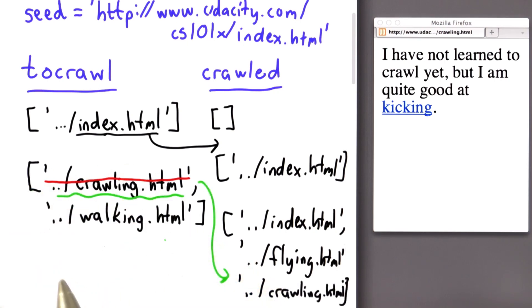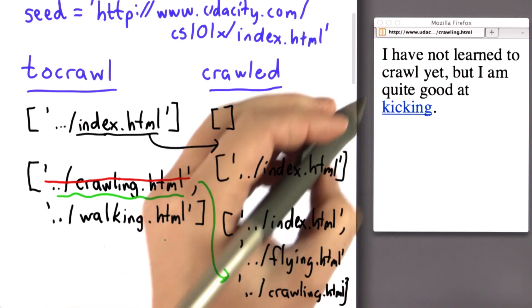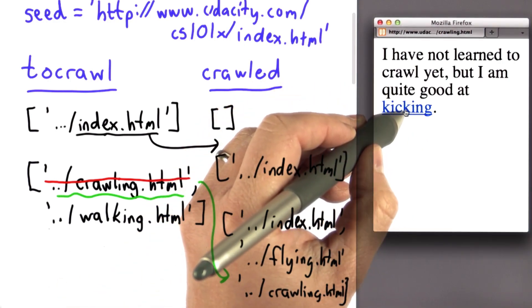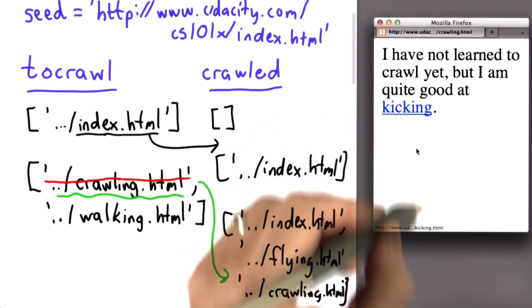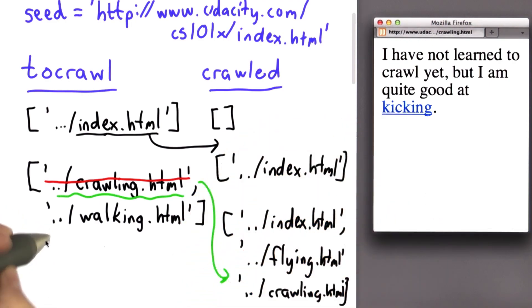And now we want to add to our to crawl list all the links that we find on this page. Well, we found the link kicking, which goes to the page kicking.html. So we're going to add that to our list of pages to crawl.